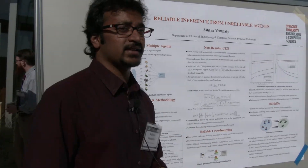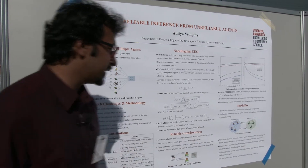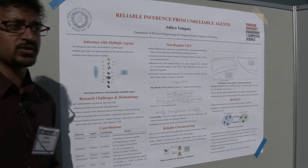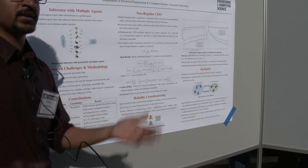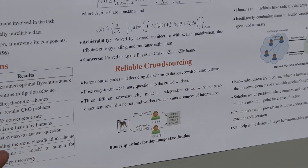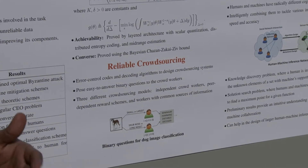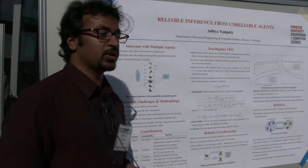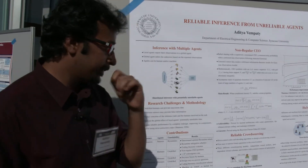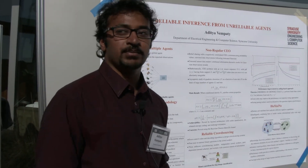The next step is designing a system in the presence of these unreliable agents. For that we look at an example of reliable crowdsourcing. Crowdsourcing is where you have multiple crowd workers observing a phenomenon, giving out their observations, and we pay them for that. But it's typically done online, so they're anonymous and they tend to be unreliable. What we see is that we can use coding approaches to actually improve performance.